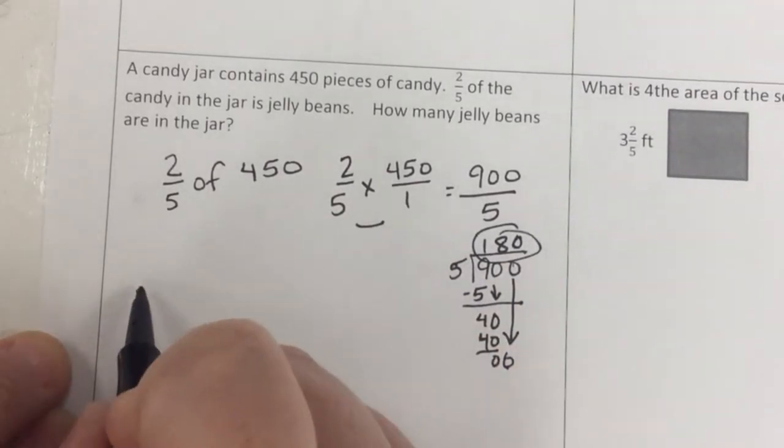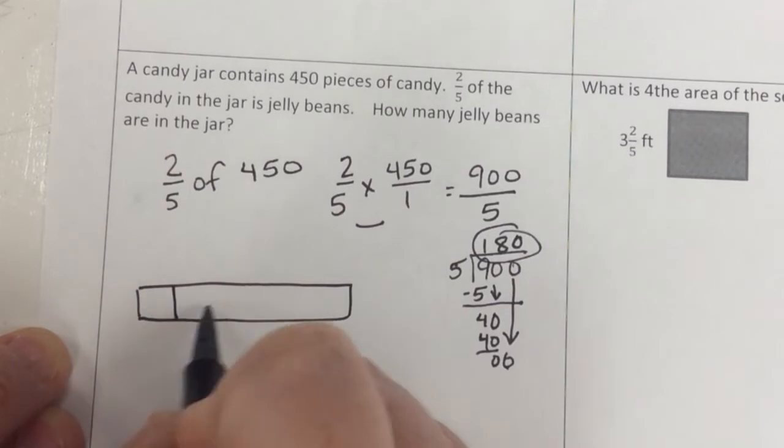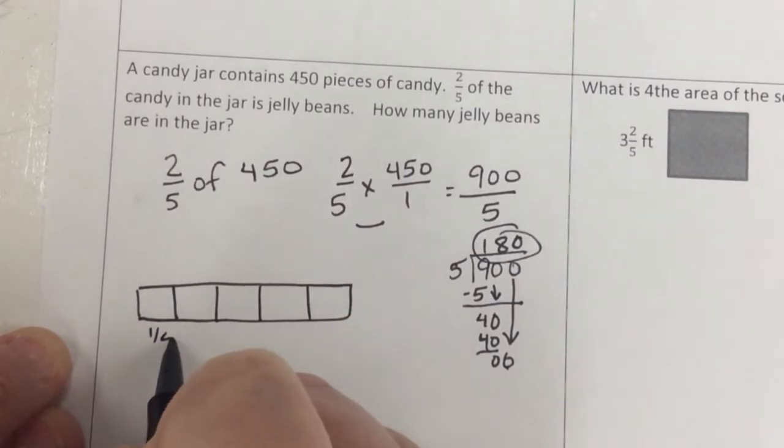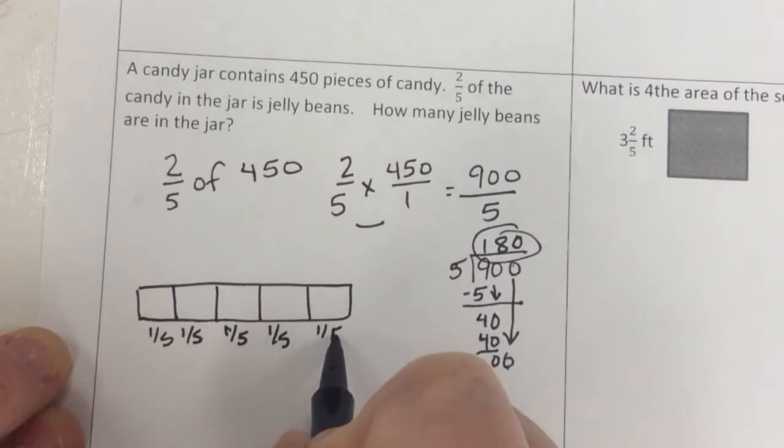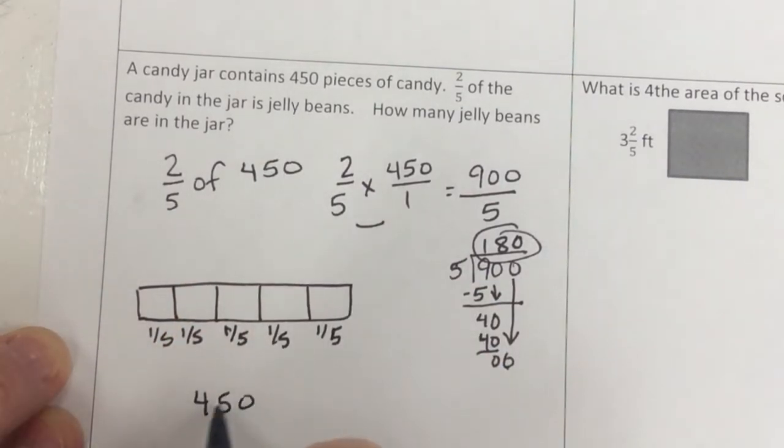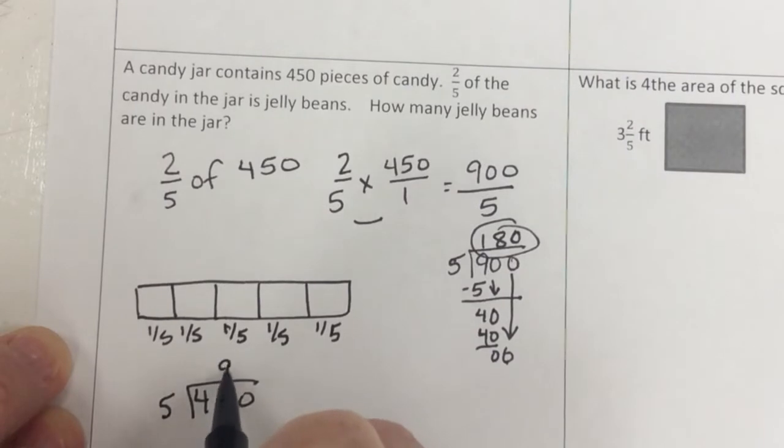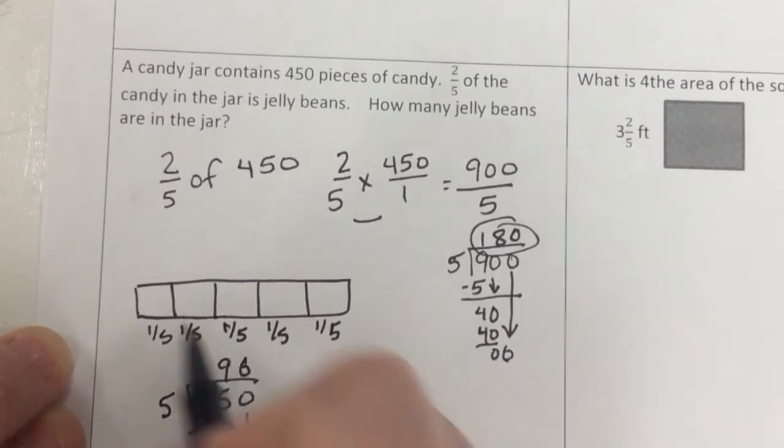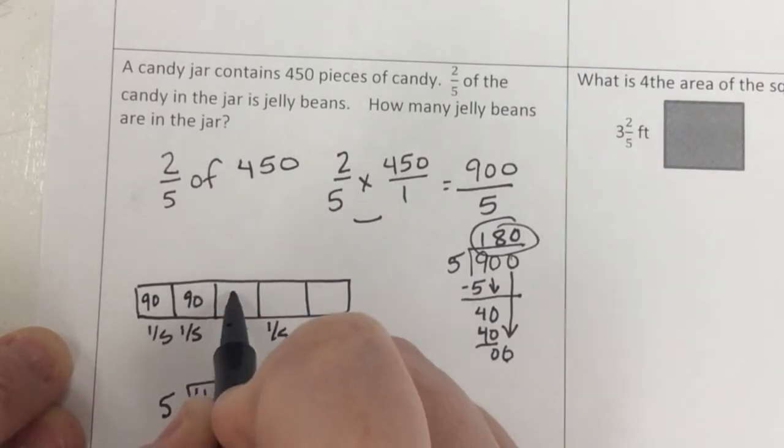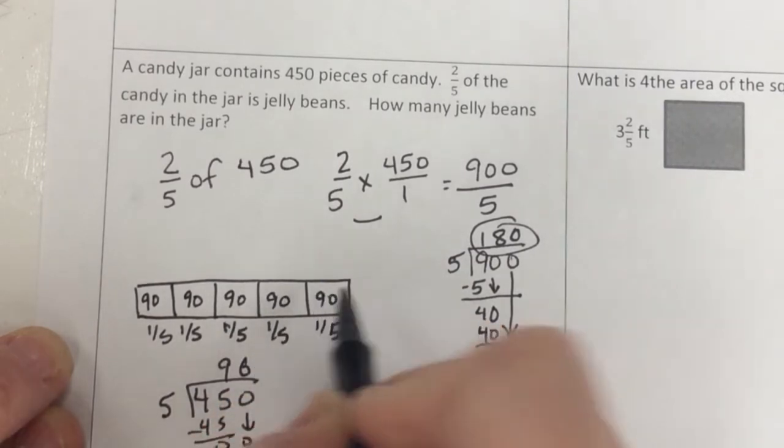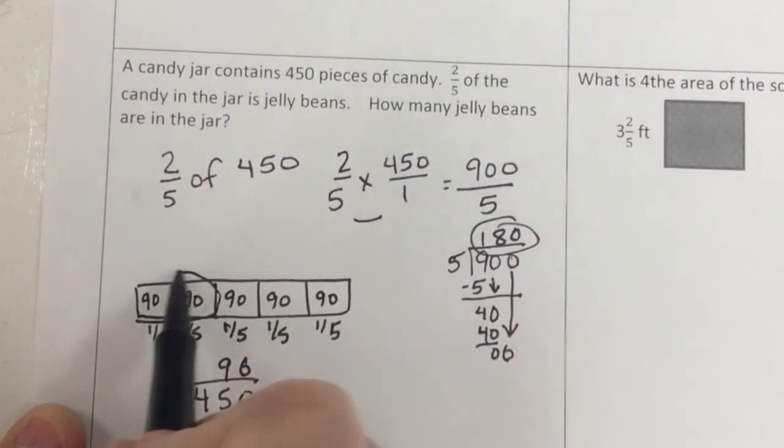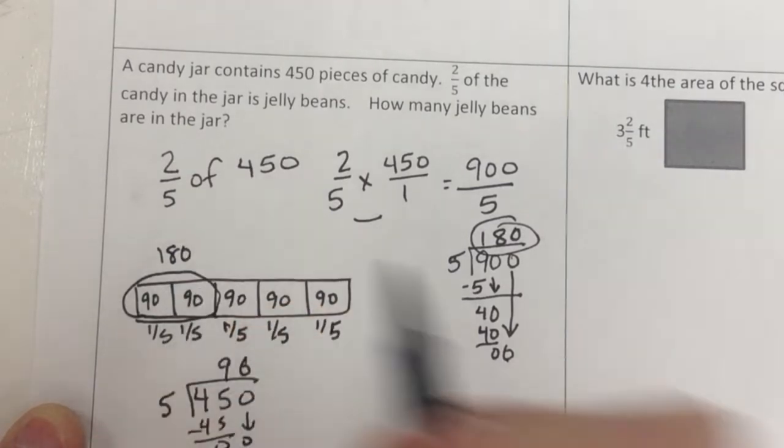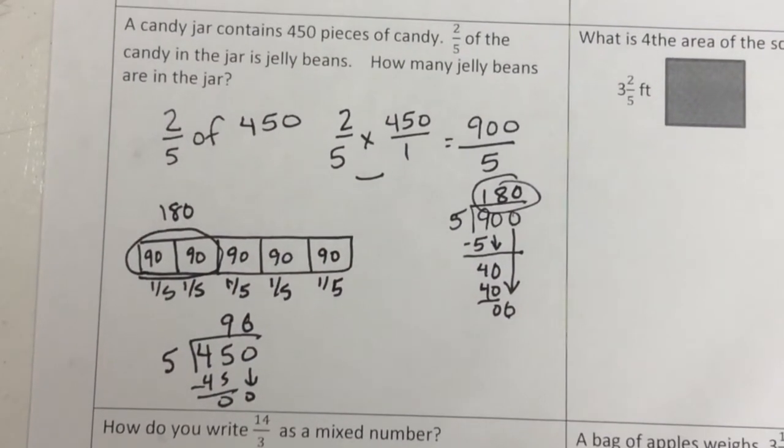But another way to look at that is with our fraction bar here. We're going to divide it into fifths. One-fifth. One-fifth. Now what is 1/5 of 450? Is that just saying 450 divided by 5? Well, 5 times 9 is 45. And then I have a zero. So 5 times a zero. So 90. So each 1/5 is 90. So 1/5 of the jar is 90 pieces of candy. So 2/5 would be two of those 90s, which is still 180. So you could choose which way you'd want to solve that, but they both get you the same answer.